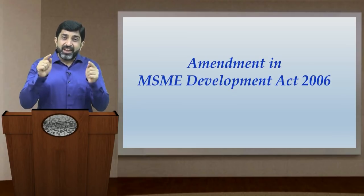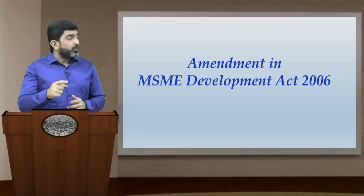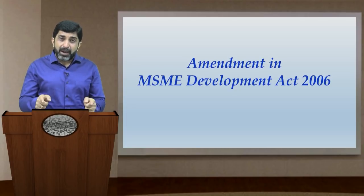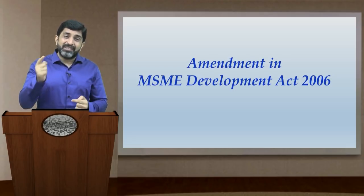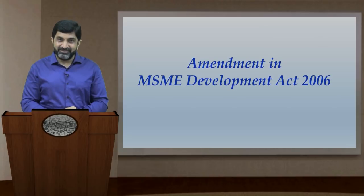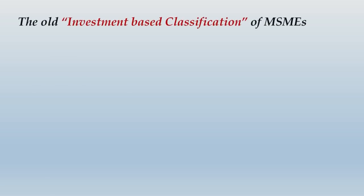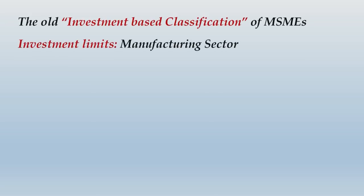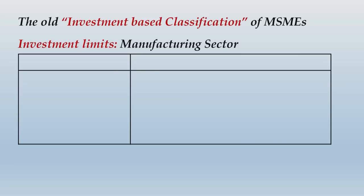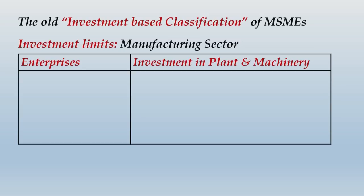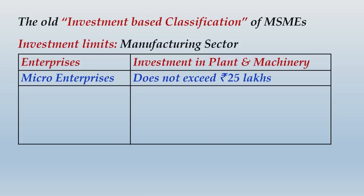Friends, let us first look at what the old criteria was and what the new classification says — we will understand both by looking at the screen, and then discuss the impact of this amendment on your exam. Let us first see the old investment-based classification. For the manufacturing sector, the base was investment in plant and machinery. Micro enterprises were those whose investment in plant and machinery does not exceed rupees 25 lakhs.